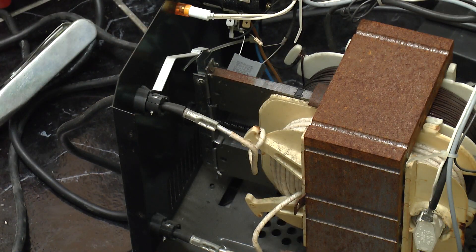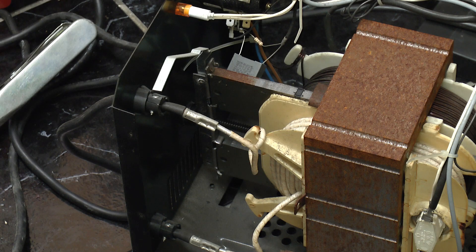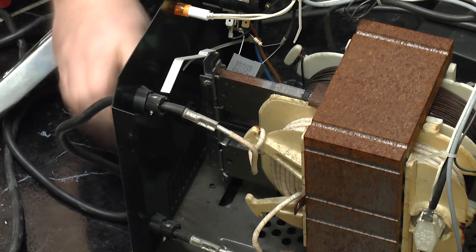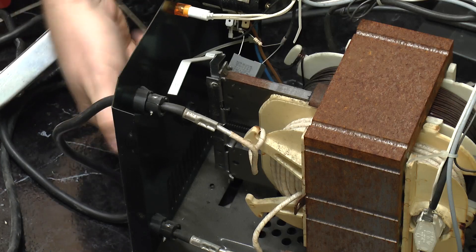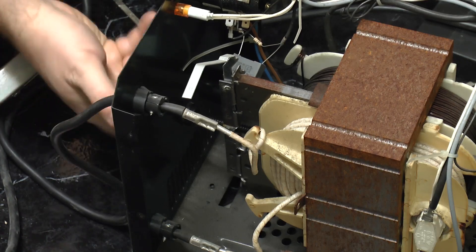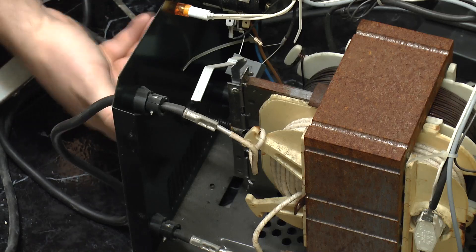The two laminated steel bars sticking out of the side of the transformer are what control the welding current. At the moment they're fully retracted out of the transformer and it's running at maximum current. If I turn the hand wheel it drives them further into the transformer and that is what turns the maximum welding current down.